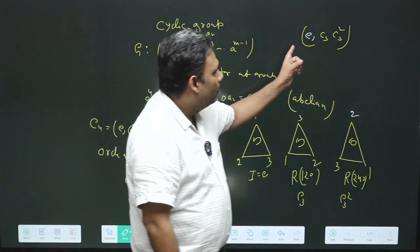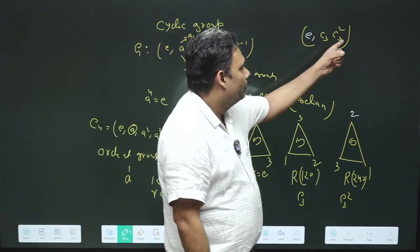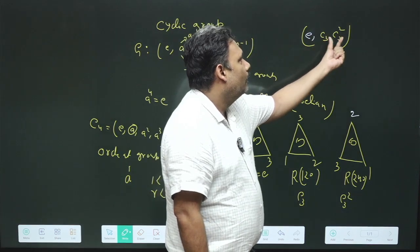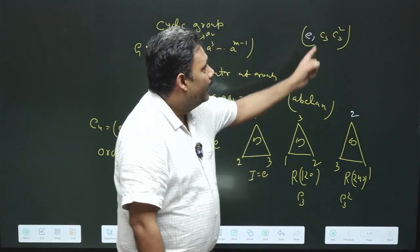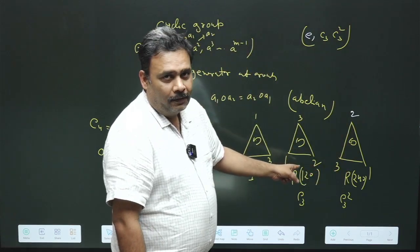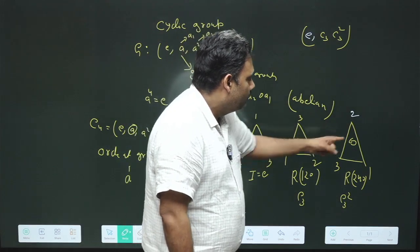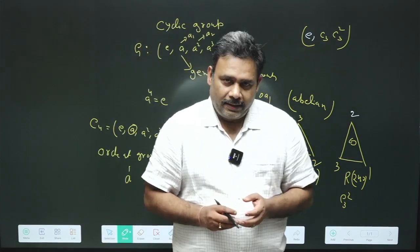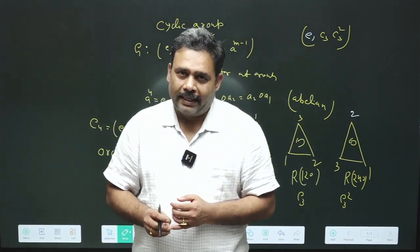What is the order of this group? The order of this group is basically three. But order of this element is one, order of this element is two, and C3 square is easily generated with C3. Once we rotate twice, we will get 240 degree rotation. This is a very interesting cyclic group.